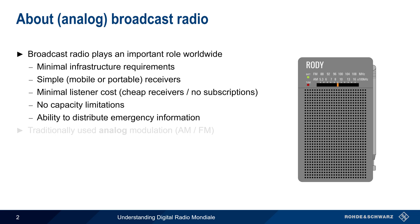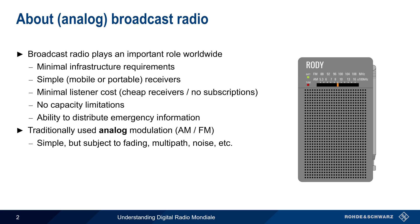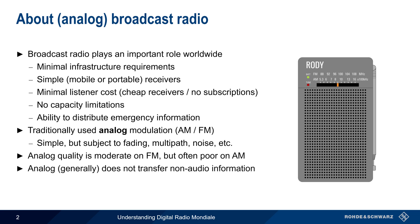Until very recently, broadcast radio used exclusively analog modulation, that is AM or FM. These are simple to implement, but reception is sometimes limited by fading, multipath, noise, etc. Although audio quality on FM is acceptable by modern standards, it's often quite poor on AM, both for medium and shortwave broadcasts. Analog broadcasts are also limited in that they generally do not transfer non-audio information, although in some cases very small amounts of digital information can be added to analog FM broadcast signals. Another limitation of analog is that it only offers a single program per frequency.